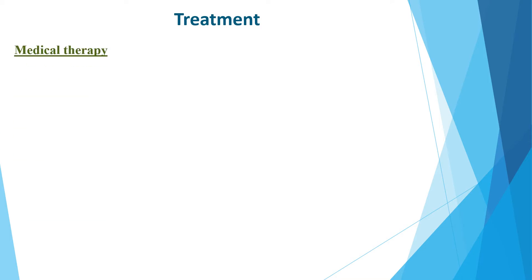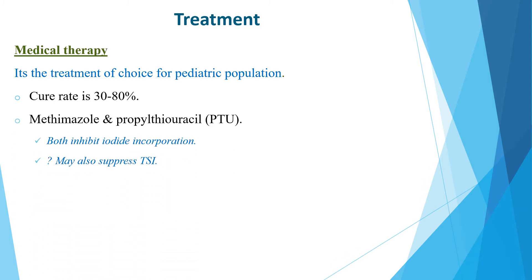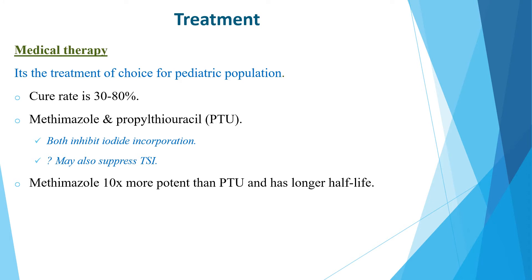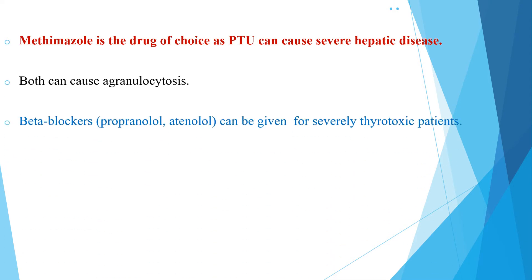Medical therapy is the treatment of choice for the pediatric population, with a cure rate of 30 to 80 percent. It includes methimazole and PTU, both of which inhibit iodide incorporation and may also suppress thyroid stimulating immunoglobulin. Methimazole is 10 times more potent than PTU with a longer half-life and is the drug of choice, as PTU can cause severe hepatic disease. Both can cause agranulocytosis. Beta-blockers such as propranolol or atenolol can be added for severely thyrotoxic patients.